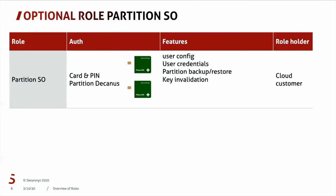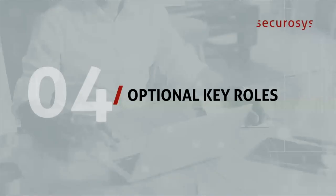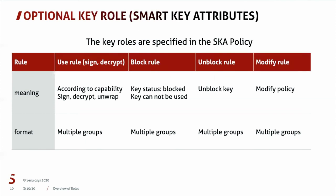The features available for the partition SO are the user config, the user credentials, the partition backup restore, and the key invalidation. The next optional role consists of additional roles you can set up on the key itself — how the key can be used — so you can put a policy onto the key. There are different rules you can specify: one rule is to use the key for signing or decrypting, one is to block the key, to unblock or to modify. For each of these features on the key, you can specify different groups and different quorums to separate roles on the actual operation on the key. This feature is optional, but it's widely popular.